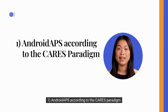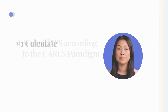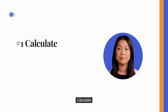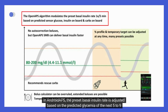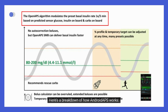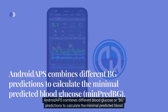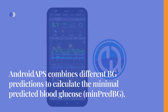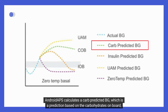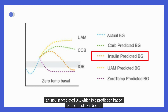Android APS according to the CARES paradigm — Calculate. In Android APS, the preset basal insulin rate is adjusted based on the predicted glycemia of the next 5 to 9 hours. Android APS combines different blood glucose or BG predictions to calculate the minimal predicted blood glucose. It calculates a CARB predicted BG, which is a prediction based on carbohydrates on board, and an insulin predicted BG, which is a prediction based on insulin on board.